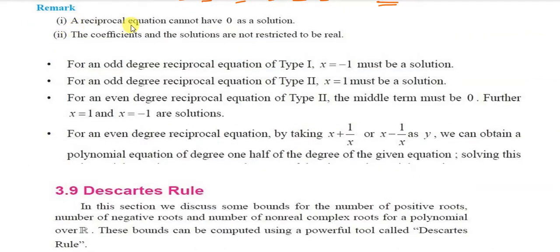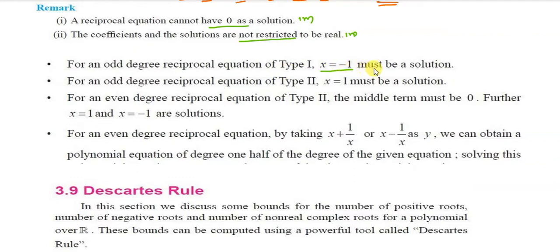Remark: a reciprocal equation cannot have 0 as a solution. Note: the coefficients and solutions are not restricted to be real. For an odd degree reciprocal equation of Type 1, x equals minus 1 must be a solution. For Type 2 of odd degree, x equals 1 must be a solution.